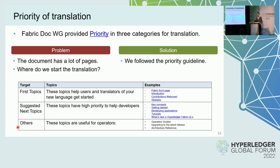After setting the milestone, we decided the priority of translation because there are many documents. The Fabric Documentation Origin Group provided priority guidelines with three levels. First topics include documents for contributors, such as contribution guides and glossaries. Second topics include key concepts, getting started, and tutorials. Other topics for developers include operational guides and architectural references. We first translated first topics, then moved to second topics, and are now working on the others.